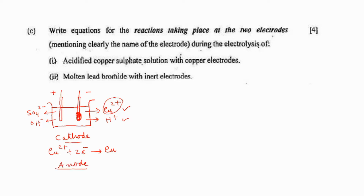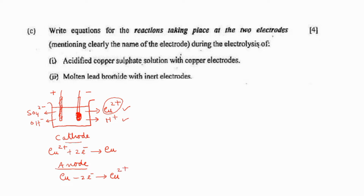Whenever you are predicting the product at the anode, think about whether you have taken an inert electrode or active electrode. Inert electrodes like platinum or graphite will not participate in the electrolytic reaction. But here we are taking copper electrode. Compared to SO₄²⁻ and OH⁻ ion, copper will be having more tendency to give away electrons to the anode. So copper will give away two electrons and be converted into Cu²⁺ ion, which comes into the solution. So we got both the cathode and anode reactions for copper sulfate solution.